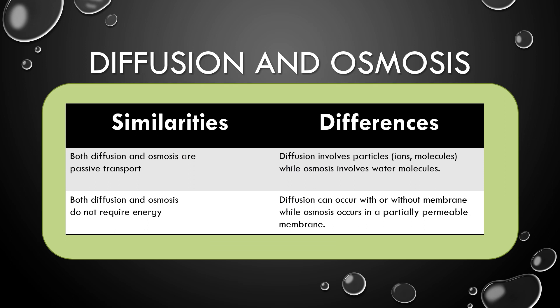Similarities and differences of diffusion and osmosis: both diffusion and osmosis are passive transport and do not require energy. Their differences are: diffusion involves particles, ions, and molecules, while osmosis involves only water molecules. Diffusion can occur with or without a membrane, while osmosis occurs through a partially permeable membrane.